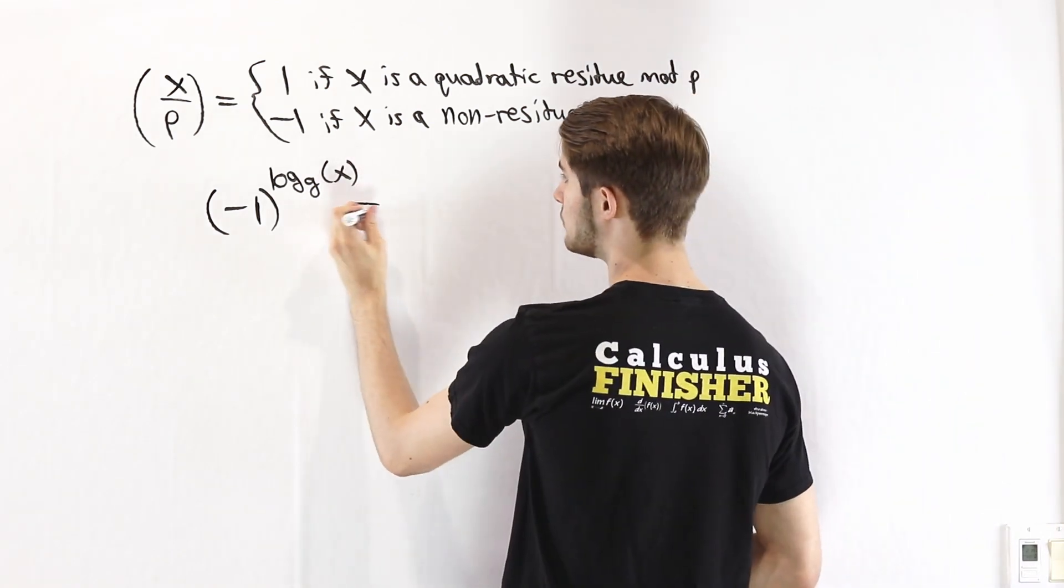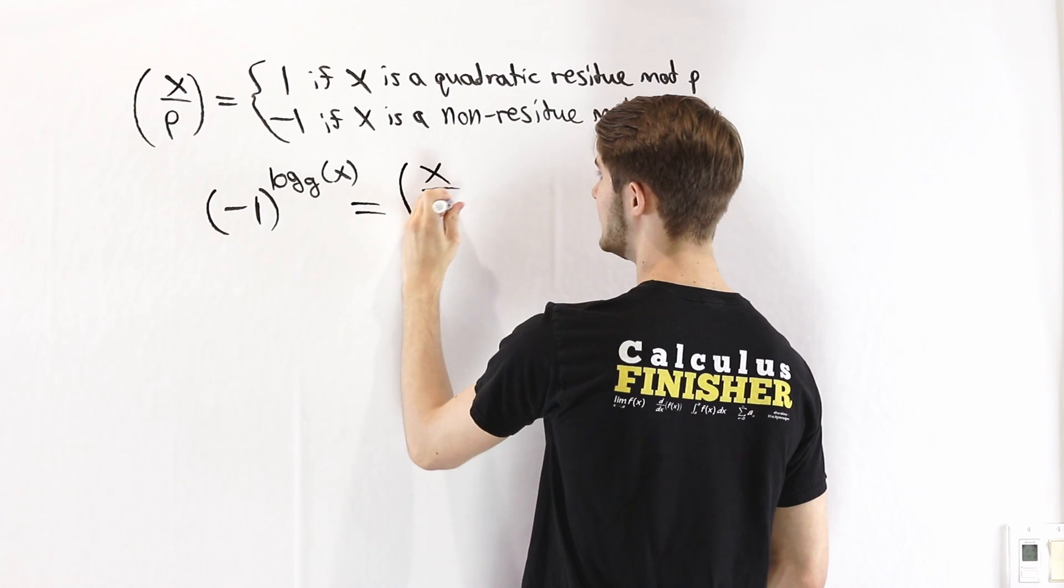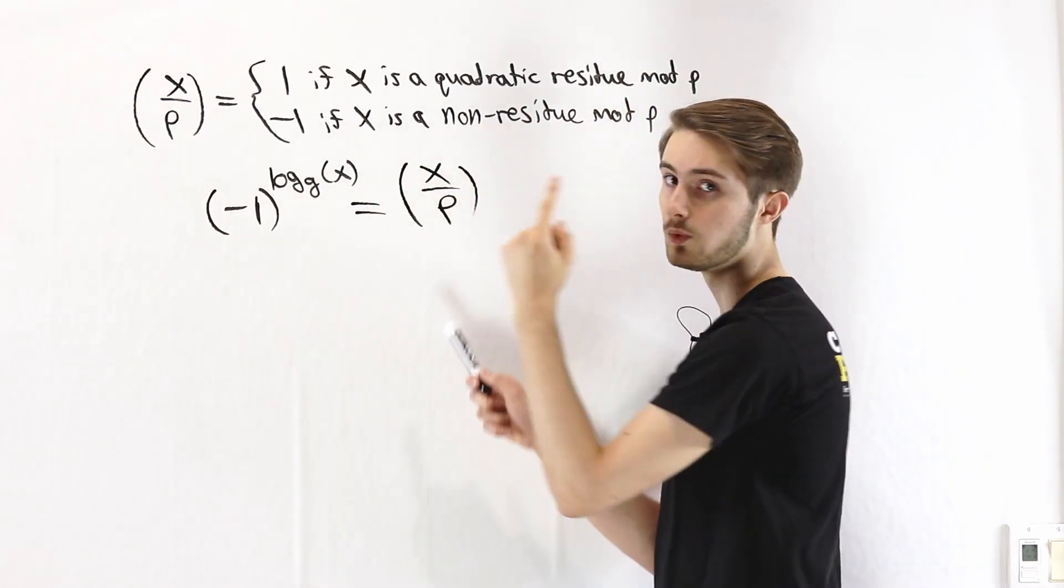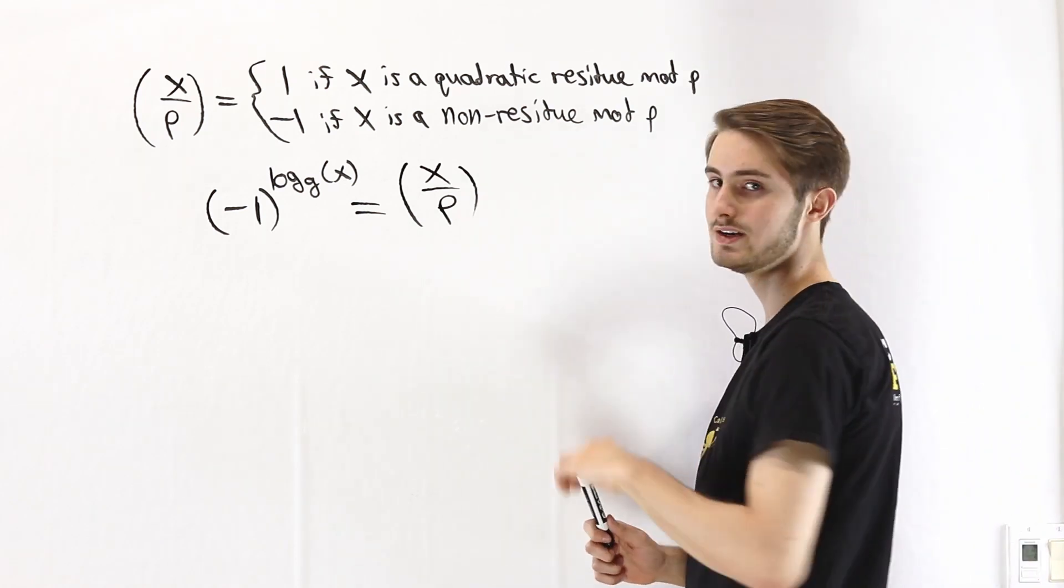Notice this: (-1) to the power of log base g of x, that's equal to (x/p). Both of these are 1 if x is a quadratic residue, and -1 if x is a non-residue.